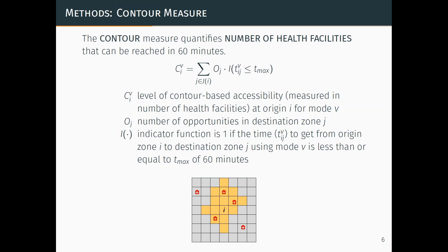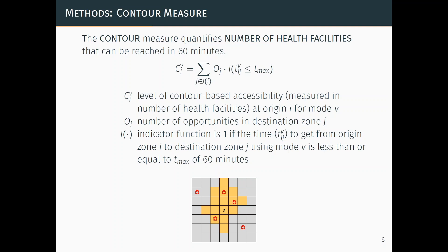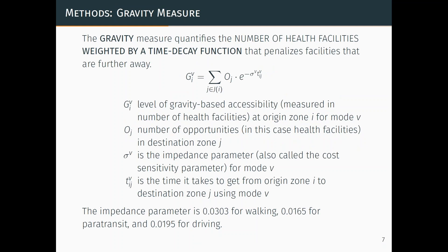A simple schematic of how this works: if you're at point I as the origin, in 60 minutes you can travel to all of the grid cells in yellow and orange. Each red image is a health facility. So the contour measure would be three — you can reach three health facilities in 60 minutes. It's pretty simplistic but easy to communicate. For the gravity measure, we add a negative exponential that weights the health facilities by the time it takes to get there — essentially a penalty for locations that are further away. We also calculated the impedance parameters, which are specific for each mode, derived from real travel trip surveys.